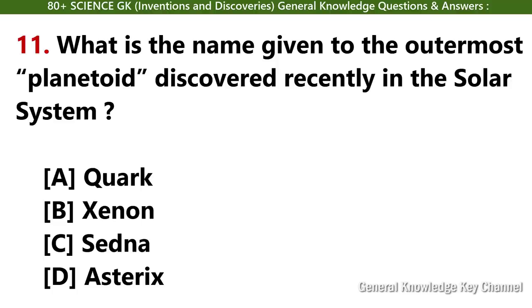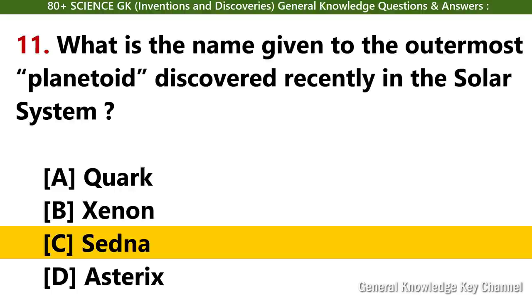What is the name given to the outermost planetoid discovered recently in the solar system? Answer C: Sedna.